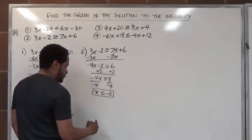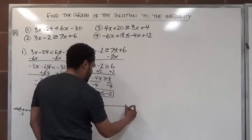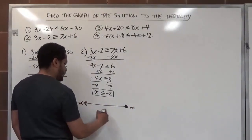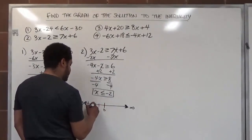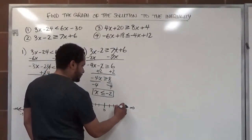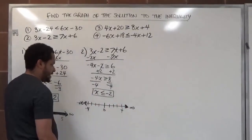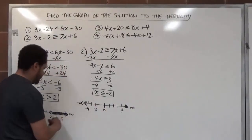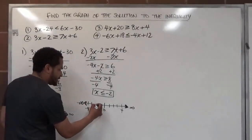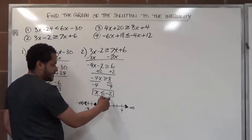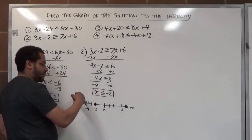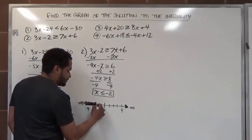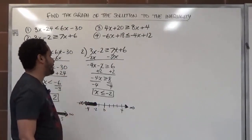Our solution goes on a number line from negative infinity to infinity. We mark zero and tick marks at 1, 2, 3, 4 and negative 1 through negative 4. Negative 2 is between zero and negative 4. This time, instead of an open dot, I'm going to fill the dot, because the solution is x less than or equal to negative 2. We shade everything below negative 2 going to the left, and the dot is filled in because x can equal negative 2.